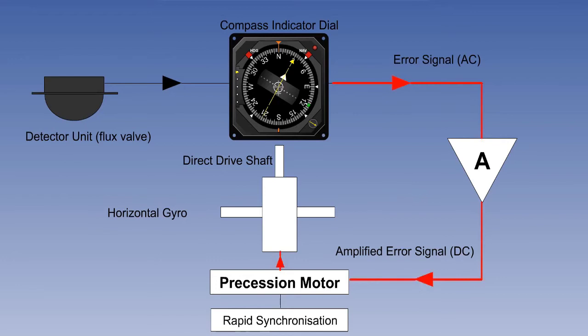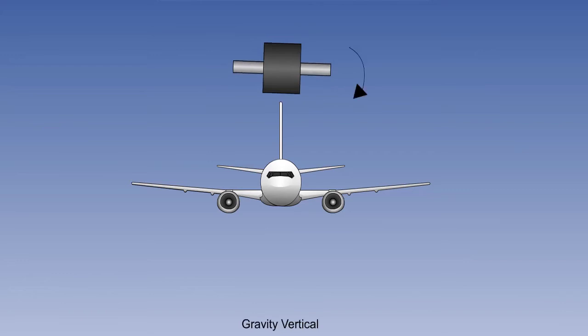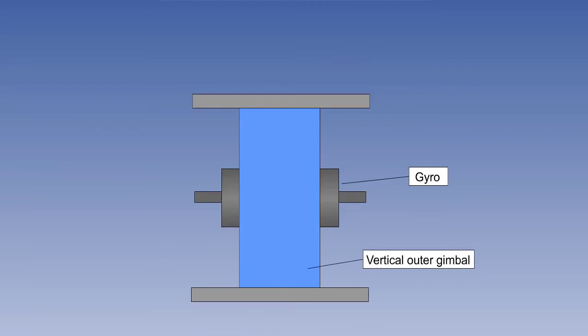However, the gyro would still topple over a period of time unless prevented from doing so. It therefore needs to be tied either to the aircraft yaw axis or to gravity in order to keep it erect. Both the yaw axis and the vertical, as defined by gravity, have been used as the datum in various models of compass. Both systems use a leveling switch and a torque motor.